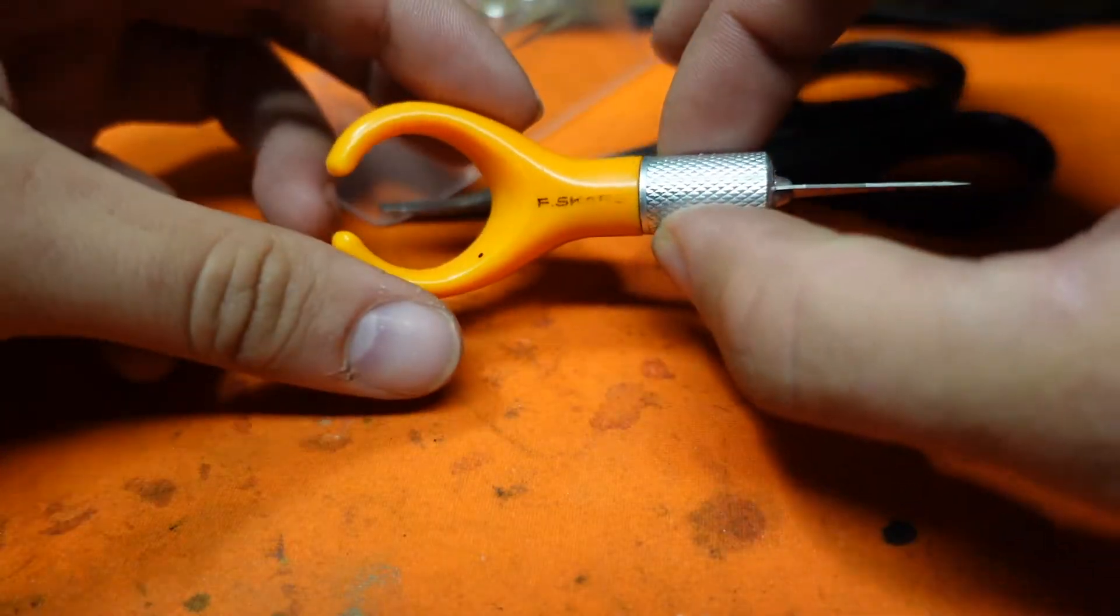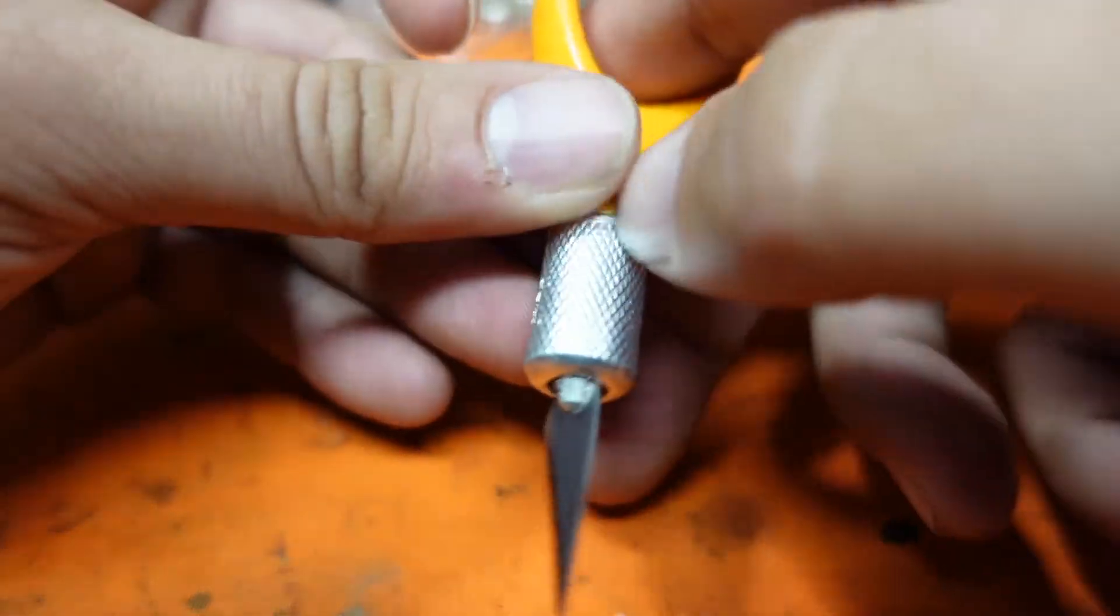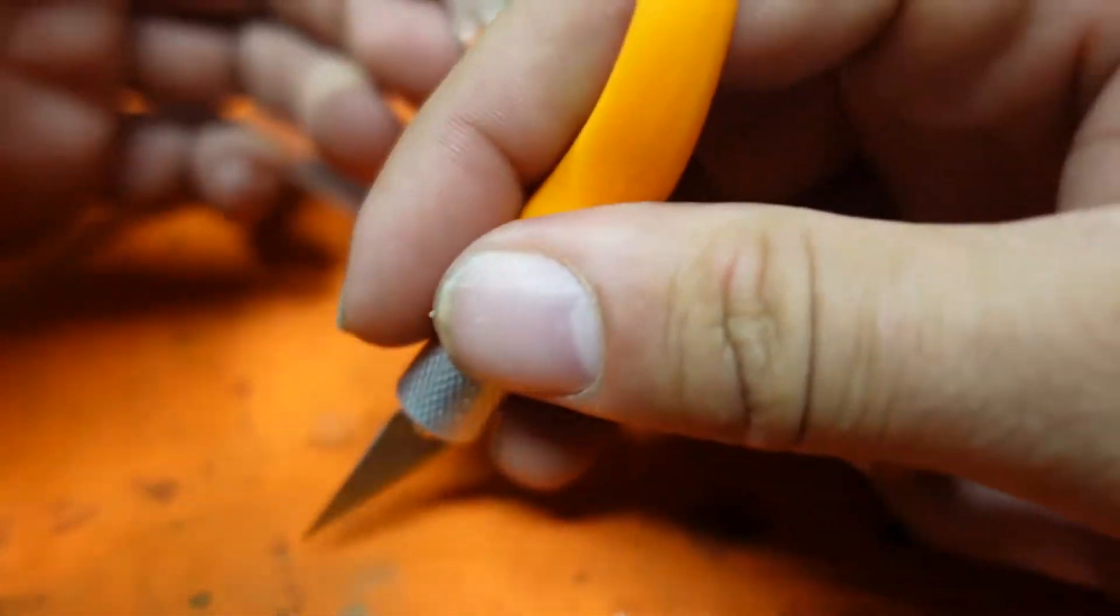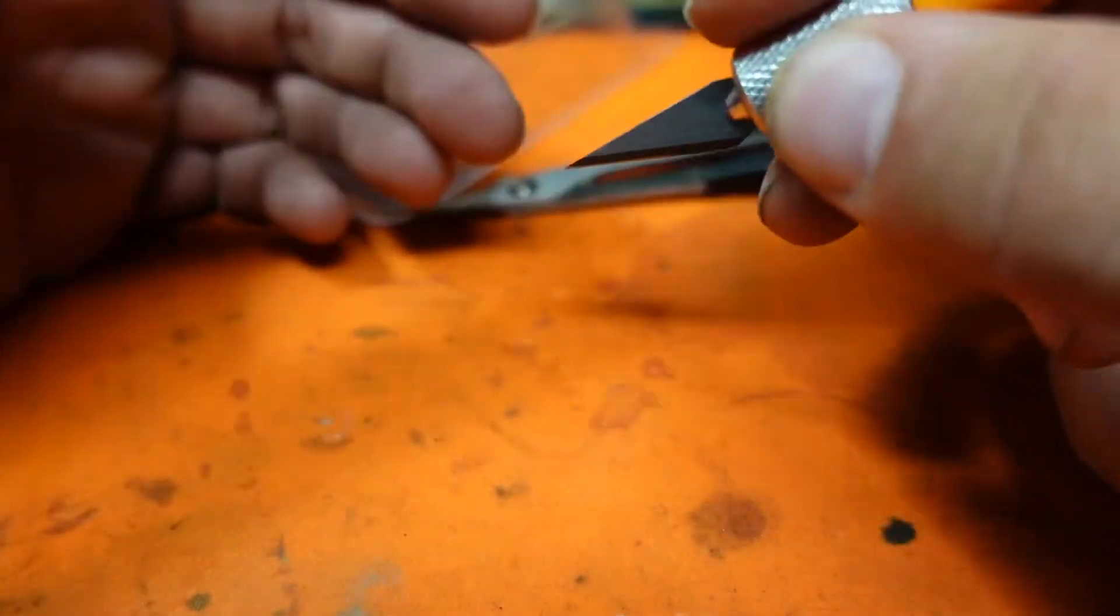Now, any X-Acto blade will do, but I prefer this short-handled Friskers model. It's designed to fit around your finger, which gives it a very nice anchored and confident cut feel while holding.